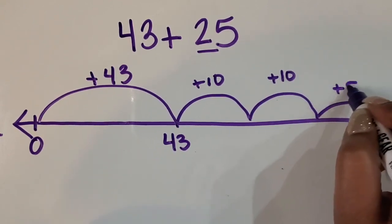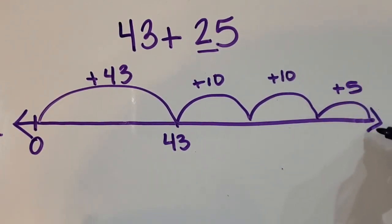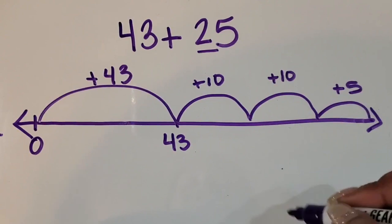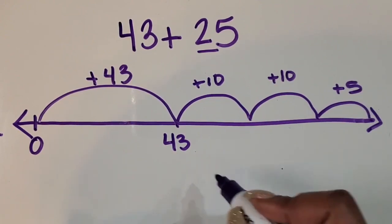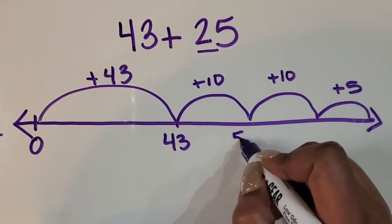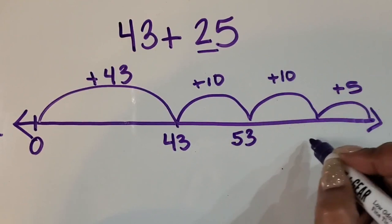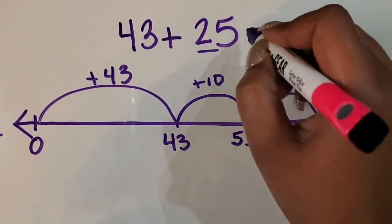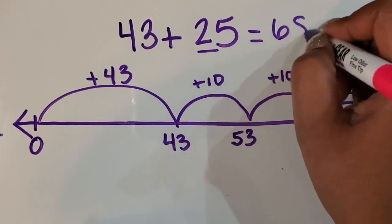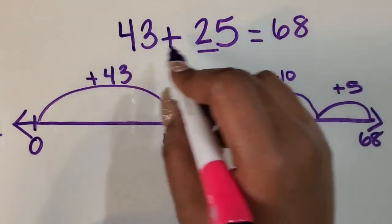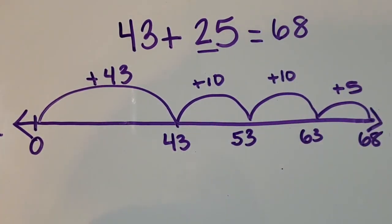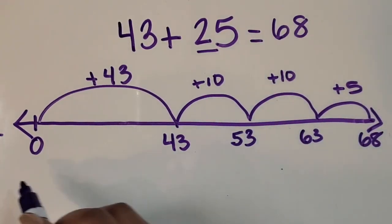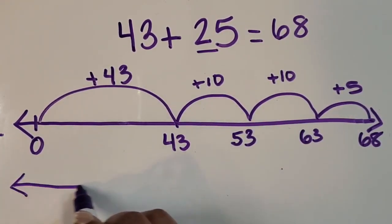And 5. I landed right at the end of the number line, but that doesn't have to happen — I'll show you in the other examples. So 43 plus 10 is 53, 53 plus 10 is 63, 63 plus 5 is 68. So the sum of 43 and 25 is 68. Now I'm going to draw another number line.